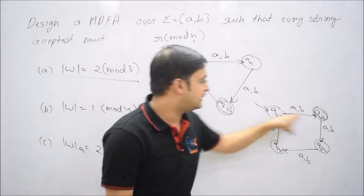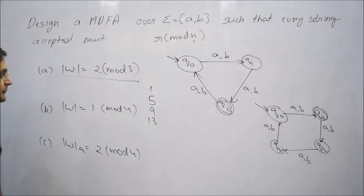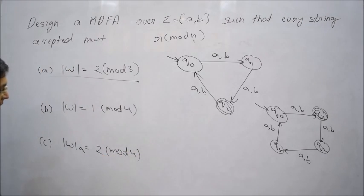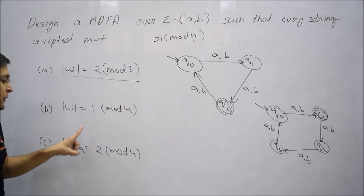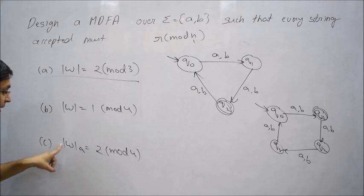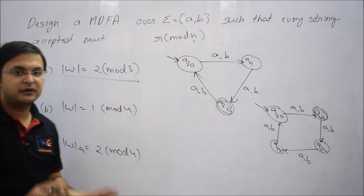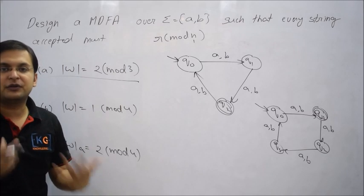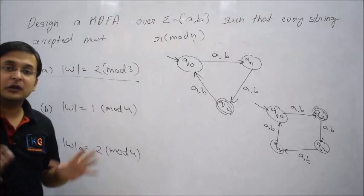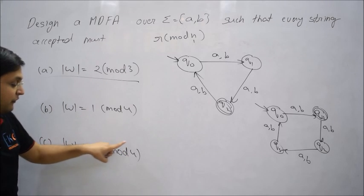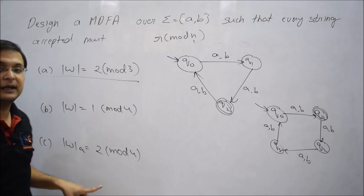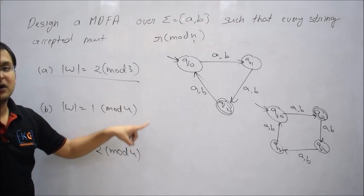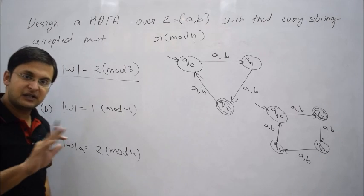Let me try one more question — the third part — which is a little bit different. This time: accept strings with 2 mod 4 pattern, but for the number of a's, not the total length. When you say number of a's mod 4, I'm not talking about the total string length; I accept all strings where the number of a's, divided by 4, gives remainder 2. So number of a's should be 2, 6, 10, and so on.